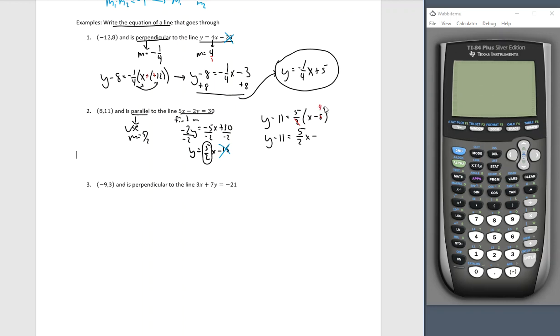So I have 5 times a negative 4, which gives me negative 20. Add 11 to both sides. Y equals 5 halves x minus 9. And I have the equation of a line that is parallel to 5 x minus 2y. Same slope. And it goes through the point 8, 11.